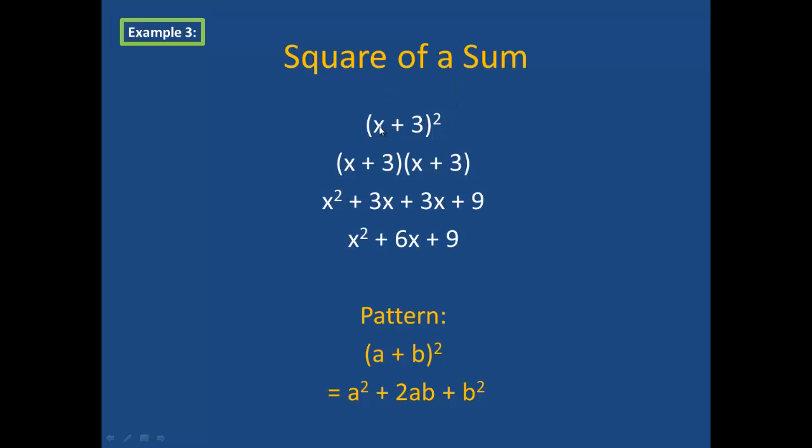The first is called the square of a sum. If I have x plus 3 in parentheses squared, what this really means is x plus 3 times itself. So I have x plus 3 times x plus 3. I can use any of the 3 methods we've learned, distributive, foil, or box, in order to find the product. I like the foil because, frankly, that's all they taught us in the 1980s, and it has stuck in my head all these years. So I like to do first is x squared, outer is 3x, inner is another 3x, and last is 3 times 3 is 9. I have like terms here in the middle, so I combine 3x and 3x, and I get x squared plus 6x plus 9.